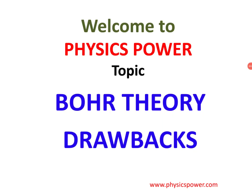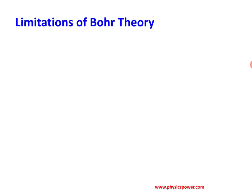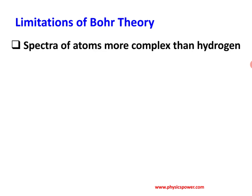Bohr theory drawbacks: even though Bohr explained the stability of the atom and was able to cover the drawbacks of Rutherford's atomic model, still some major properties exhibited by the atom he was unable to explain. There are many drawbacks we will discuss one by one. The first one is the spectra of atoms more complex than hydrogen.